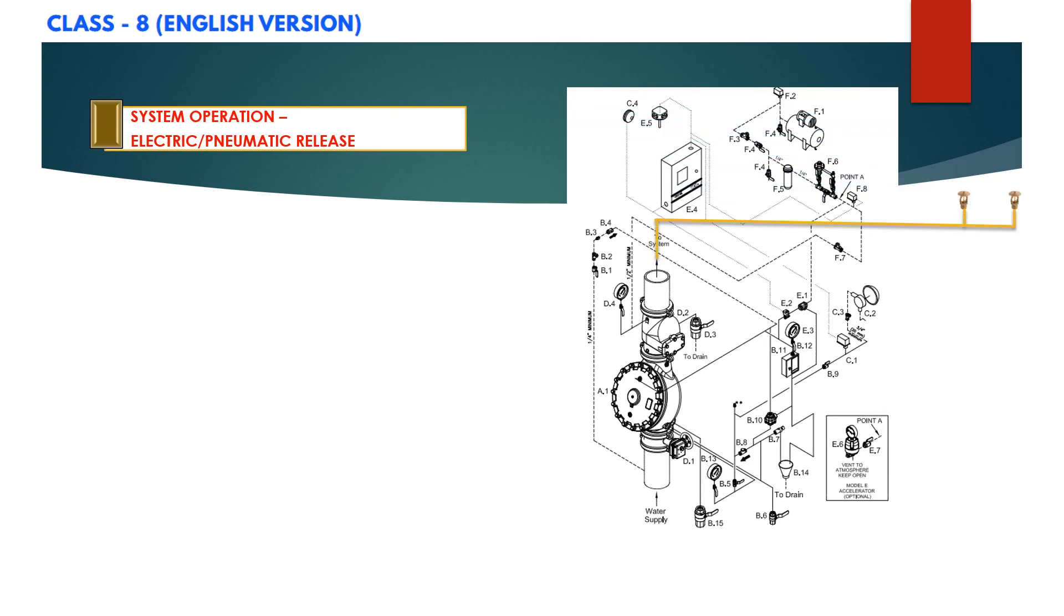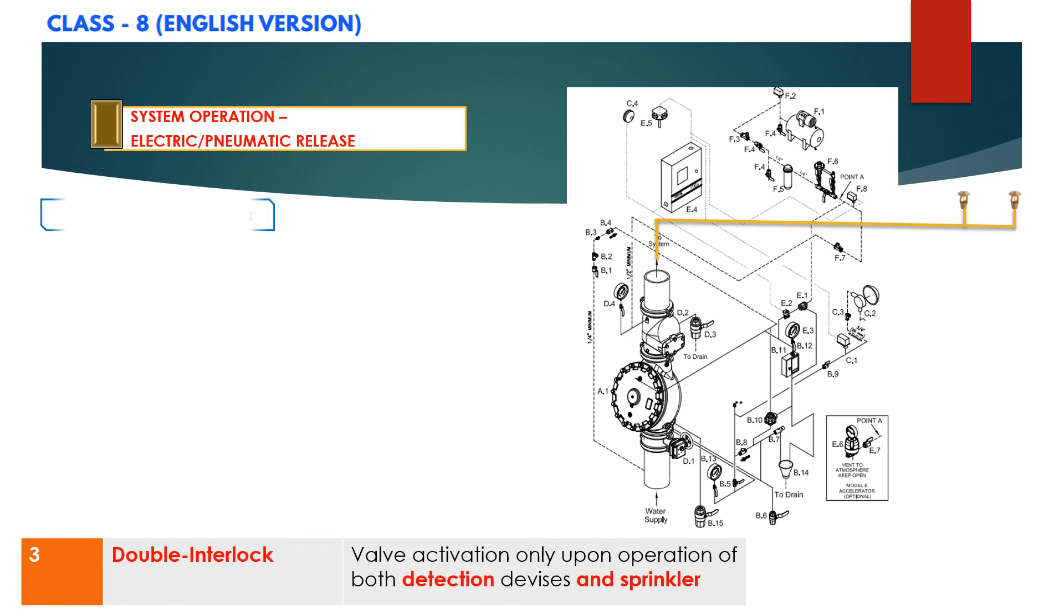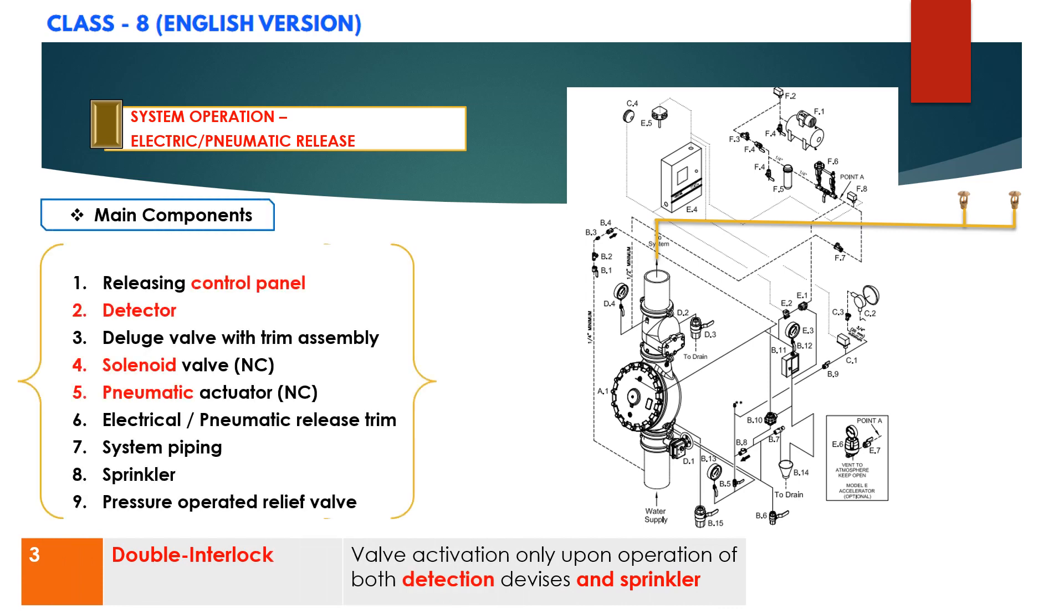Now let us go through the system operation of double interlock electric pneumatic release preaction system. As you can see on your screen, main components again.